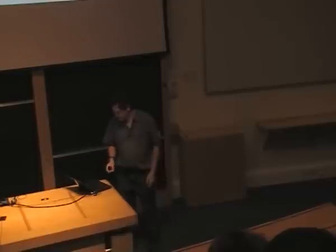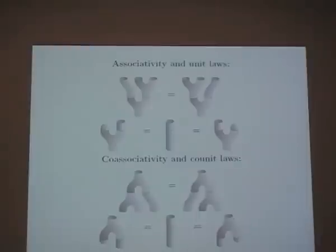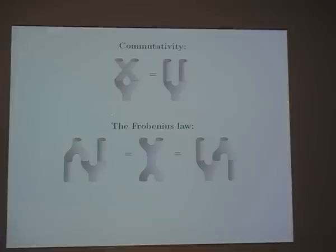You can build all 2D cobordisms from basic building blocks. When you have a two-dimensional TQFT, everything maps over to finite-dimensional vector spaces. You get a vector space associated to the circle, equipped with a multiplication and unit but also a co-unit and co-multiplication — upside-down versions satisfying laws from the topology. An algebra has associativity and a unit law; a co-algebra has co-associativity and a co-unit. If the algebra is commutative, the co-algebra is co-commutative. Then there's the Frobenius law, which relates the multiplication and co-multiplication.